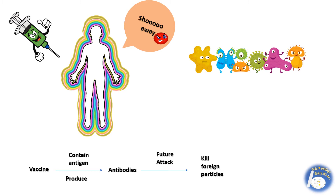When a vaccine is administered into our body, the body recognizes it as a foreign agent and produces antibodies against it. The body stores these antibodies for future attacks in the form of memory. Whenever that foreign agent attacks, the body releases those antibodies to fight with that harmful particle.